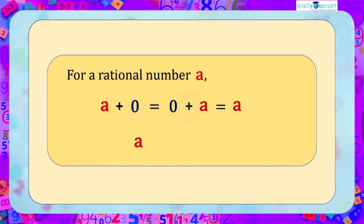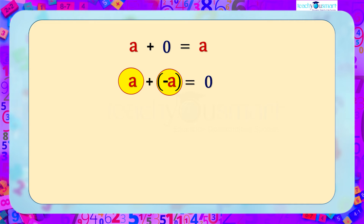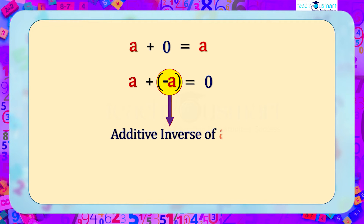Now we have a plus zero equals a, or we can write it as a plus minus a equals zero. Here we get an element minus a which, when added to the original number a, results in the additive identity zero. We call minus a the additive inverse of a.